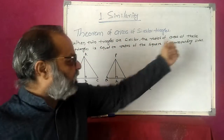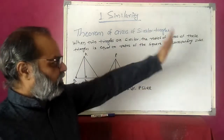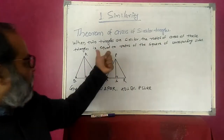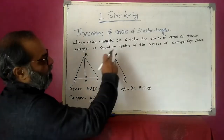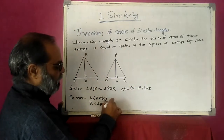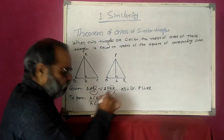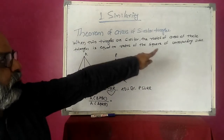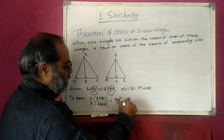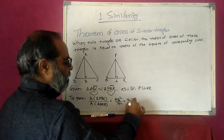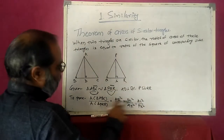Now we want to prove that the ratio of areas of these triangles equals the ratio of squares of corresponding sides. So: area of triangle ABC divided by area of triangle PQR equals AB² / PQ² equals BC² / QR² equals AC² / PR². This is what we want to prove.